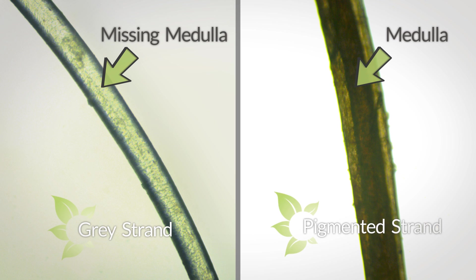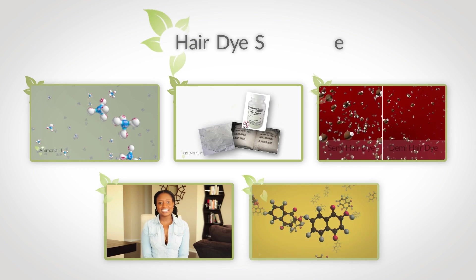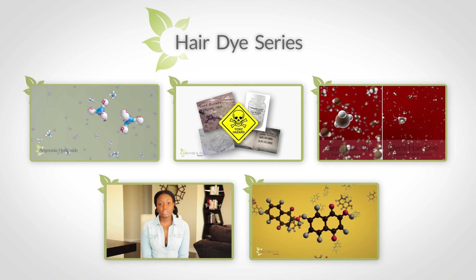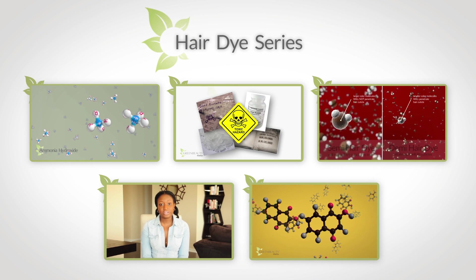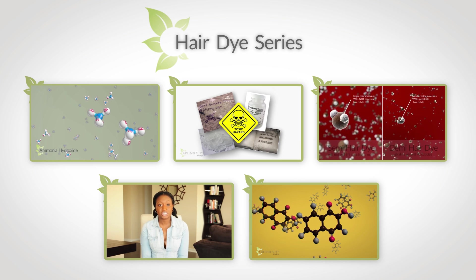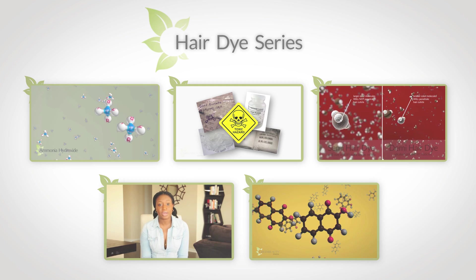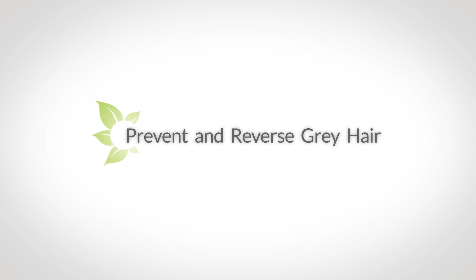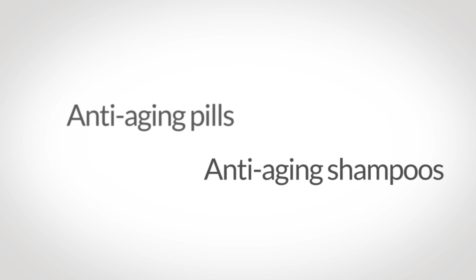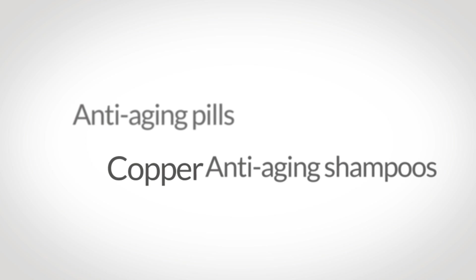The use of harsh chemicals like temporary or permanent hair dyes without proper counteractive measures will only further diminish the health of your already fragile gray hairs, causing it to look super dull and dry. Here are links to a really informative five-part series that goes over the science of hair dyes.